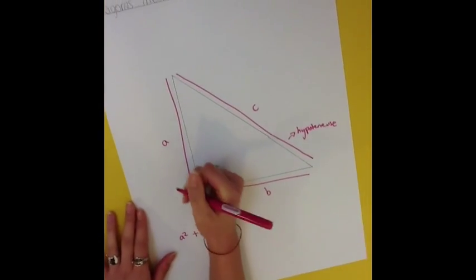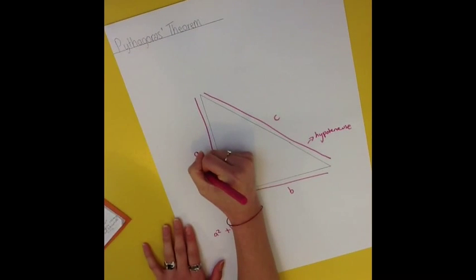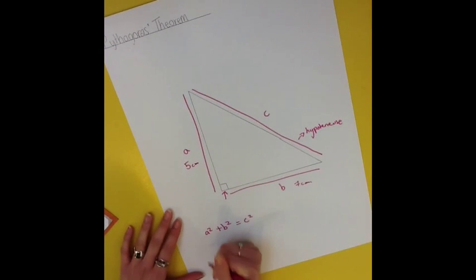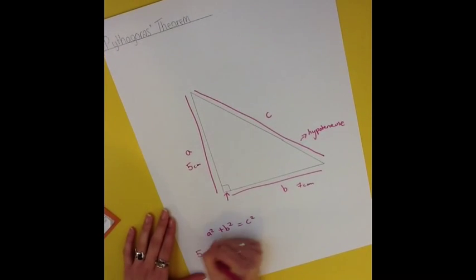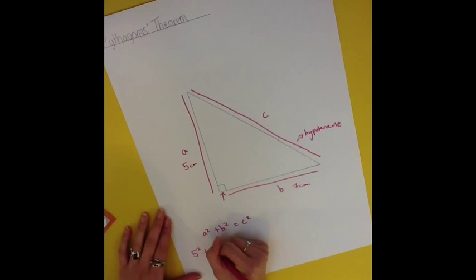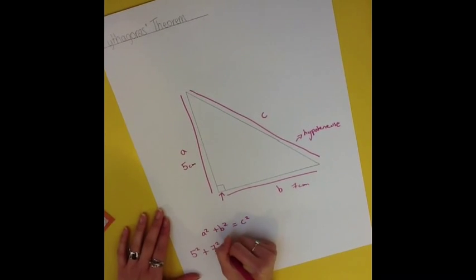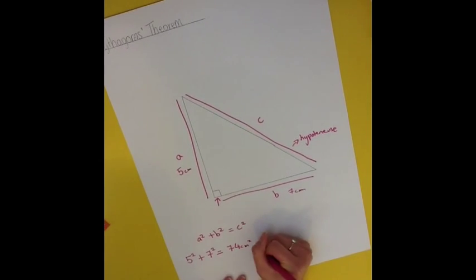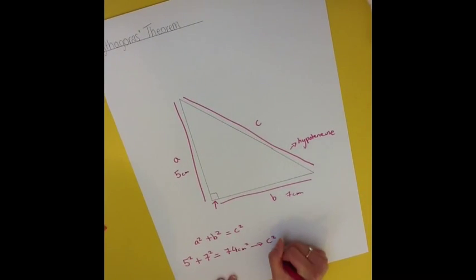Take the length of side a to be 5 cm, and the length of b to be 7 cm. Apply the formula. So, 5 cm squared plus 7 cm squared equals 74 cm squared.